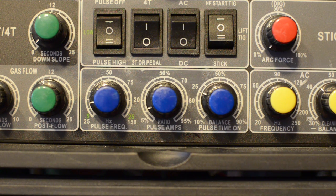Here's what these settings look like. Pulse frequency is how many times the torch gets a burst of amps per second. Pulse amps is how many amps you're getting when it's not bursting. And pulse time on is how long your burst lasts.